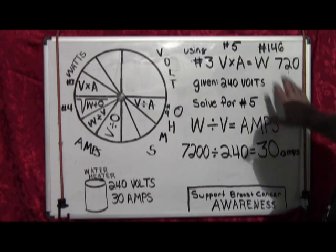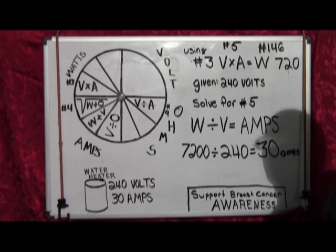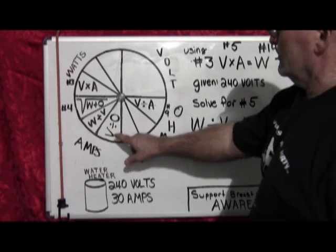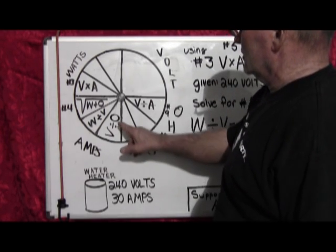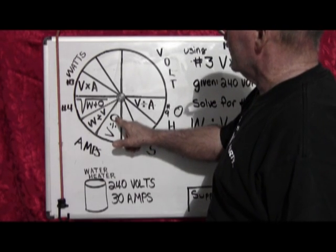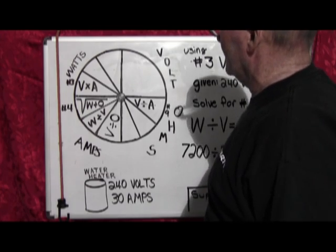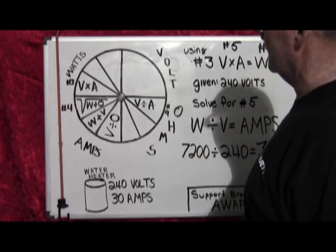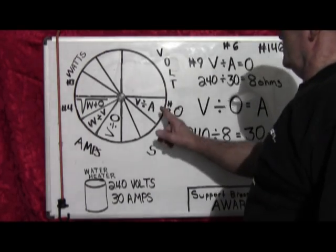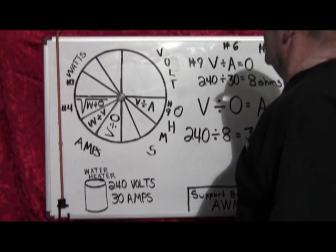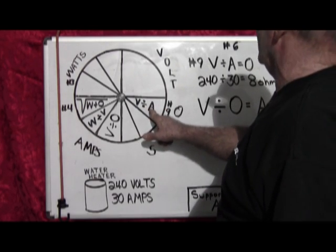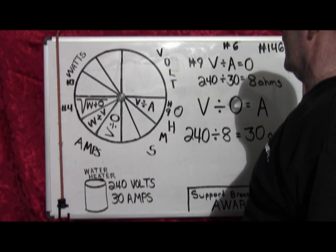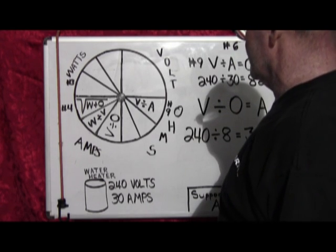Alright, let's move on to volts divided by ohms to finish up on the pie chart. Once again we use number nine, which is volts divided by amps will give you ohms. We've got volts and amps already provided.